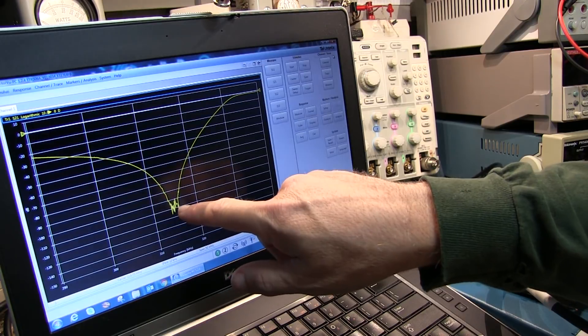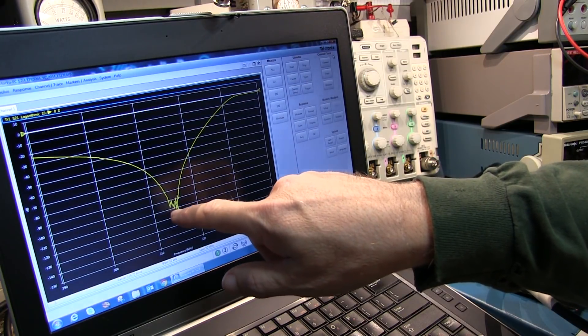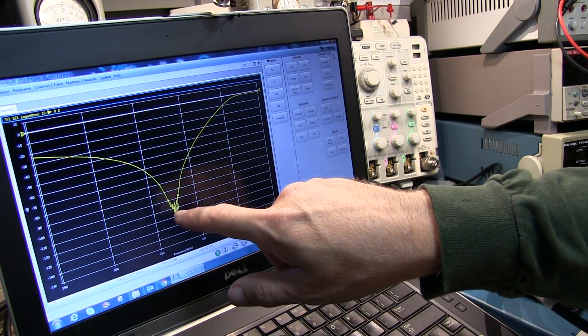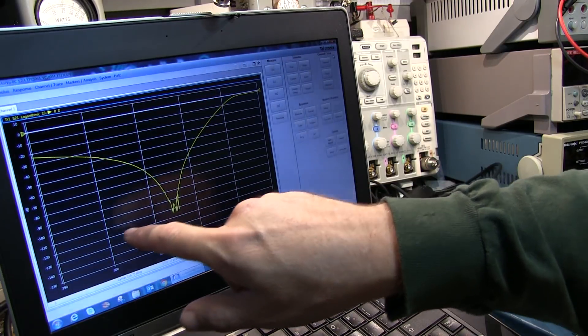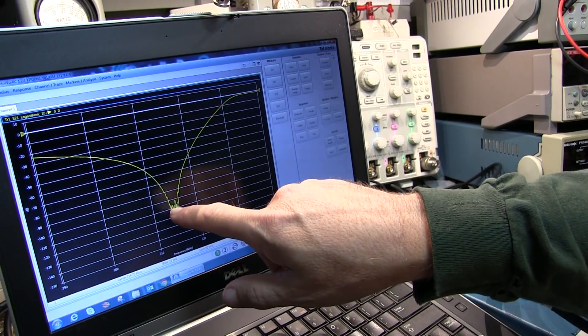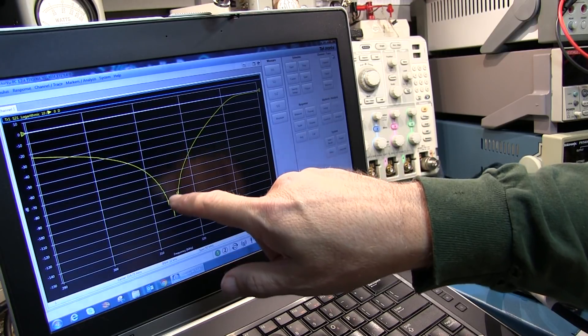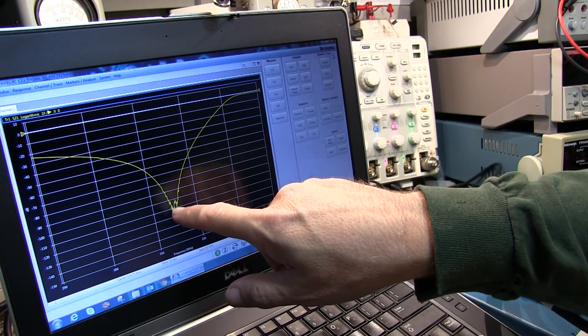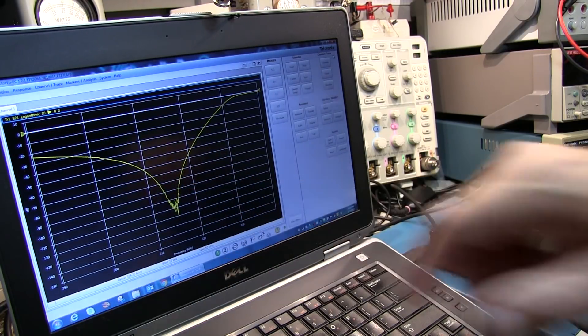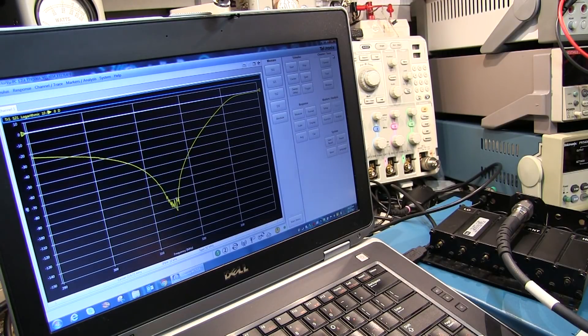If we take a look now, we're hitting the noise floor or getting closer to the noise floor of the VNA. I'm looking at about 110 dB down. So I've just gained myself another 20 dB in terms of improving that measured notch compared to the spectrum analyzer.